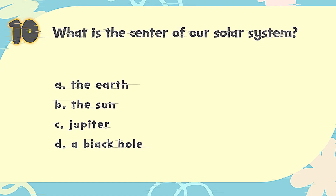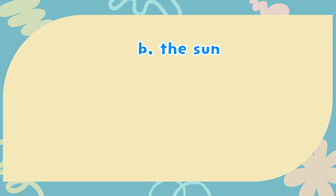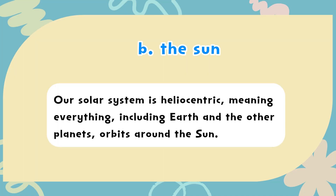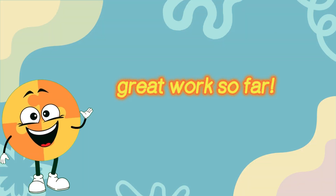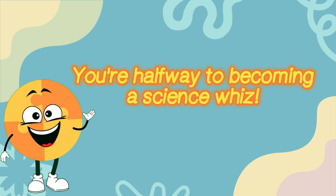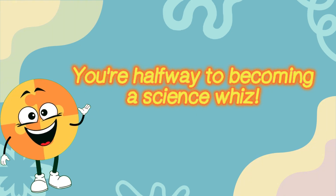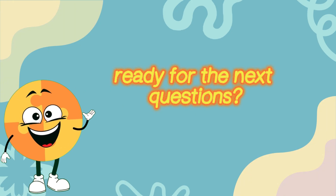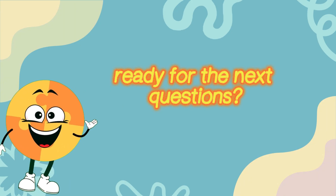The correct answer is B. The Sun. Our solar system is heliocentric, meaning everything — including Earth and the other planets — orbits around the Sun. Great work so far! You're halfway to becoming a science whiz. Ready for the next questions?